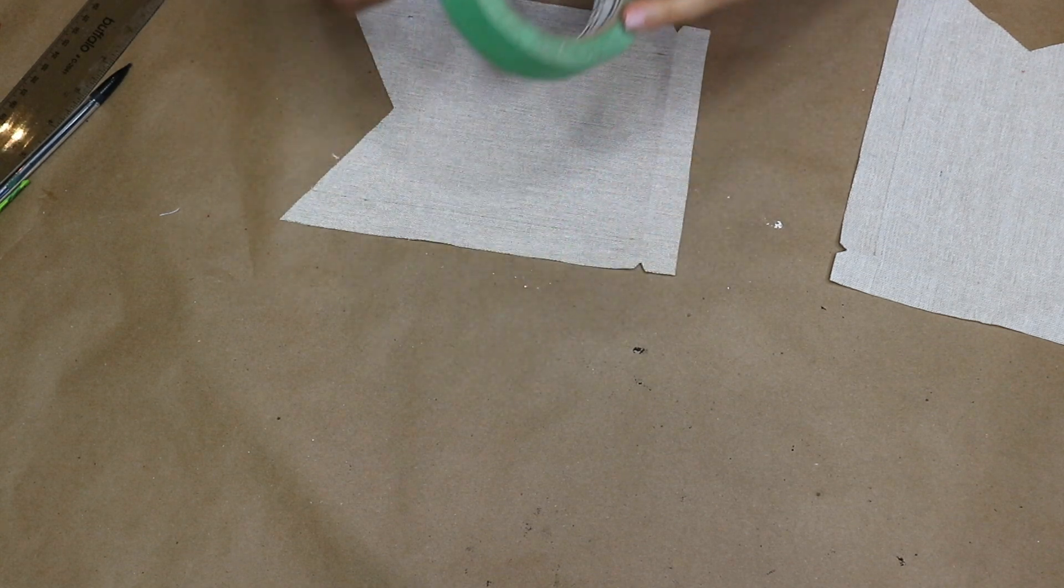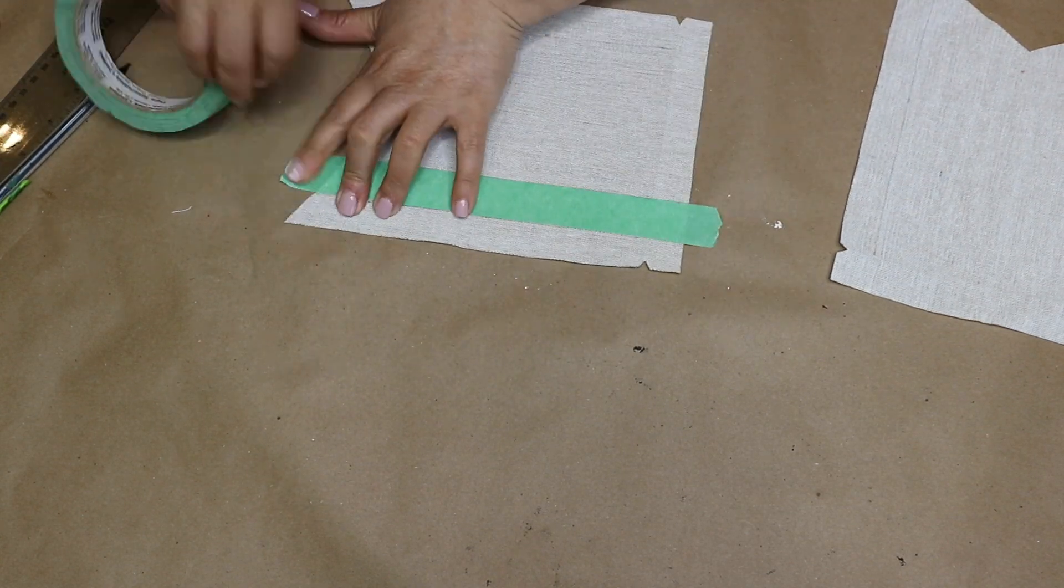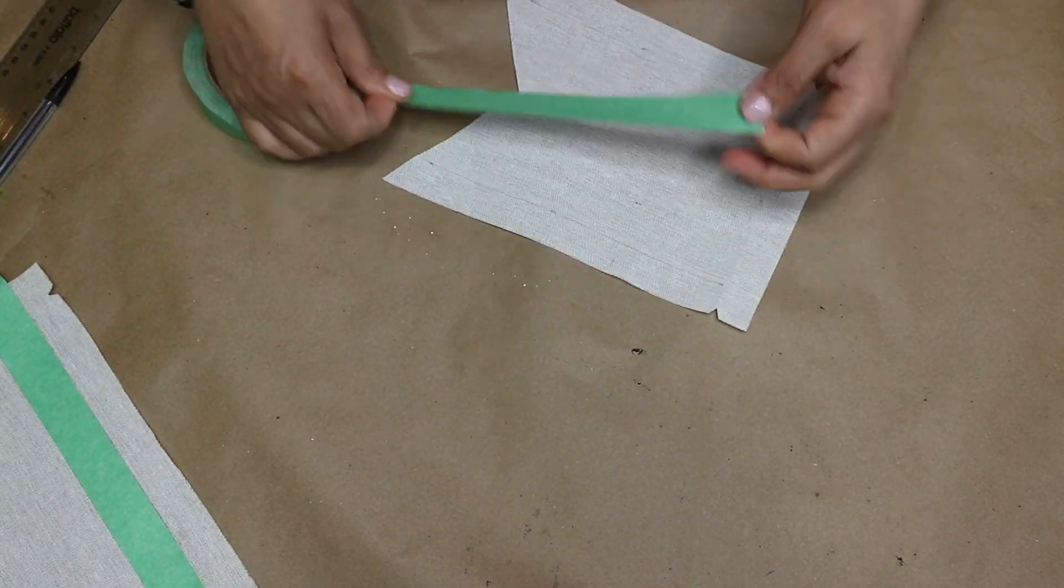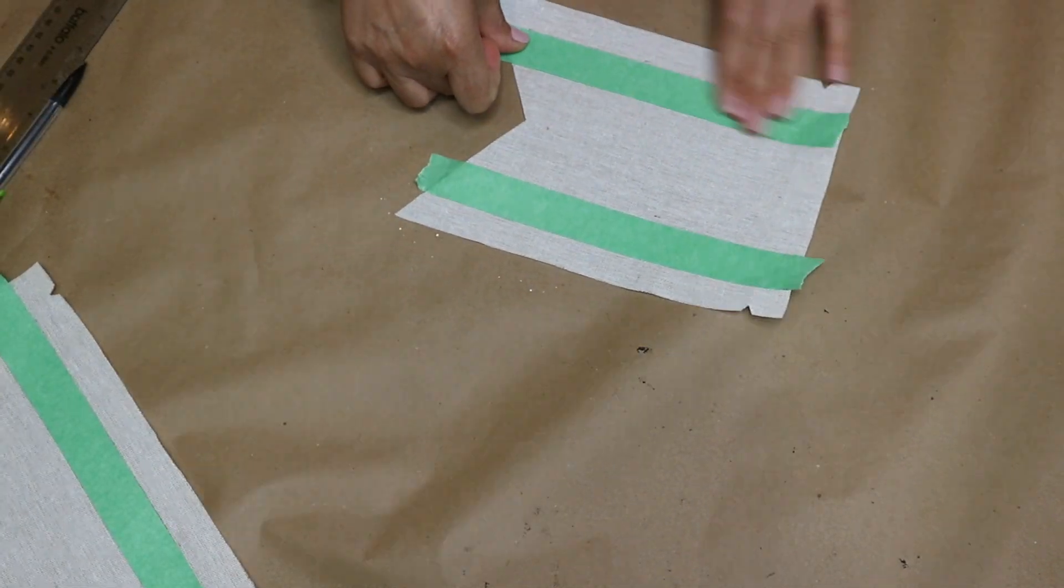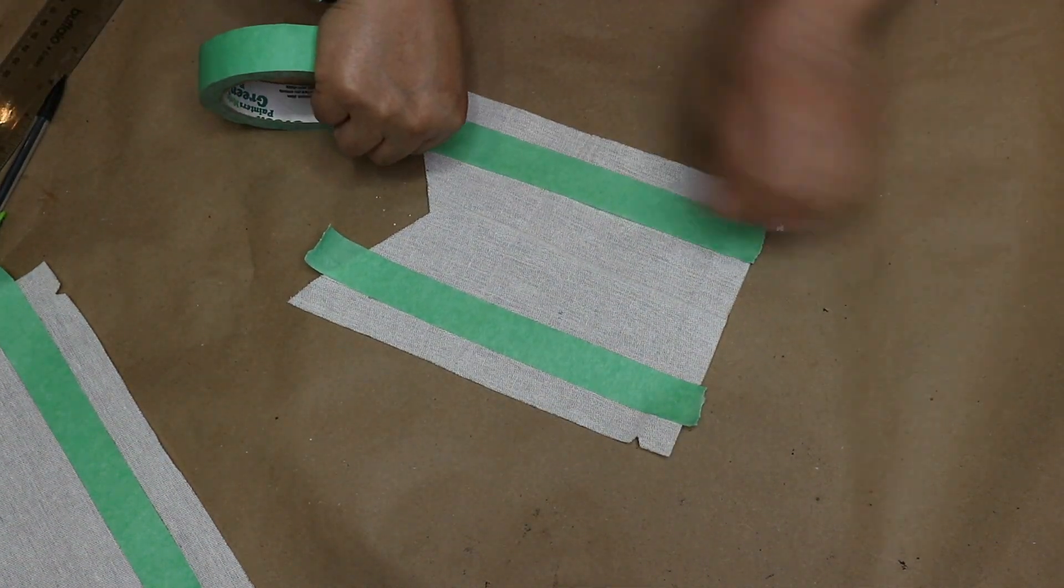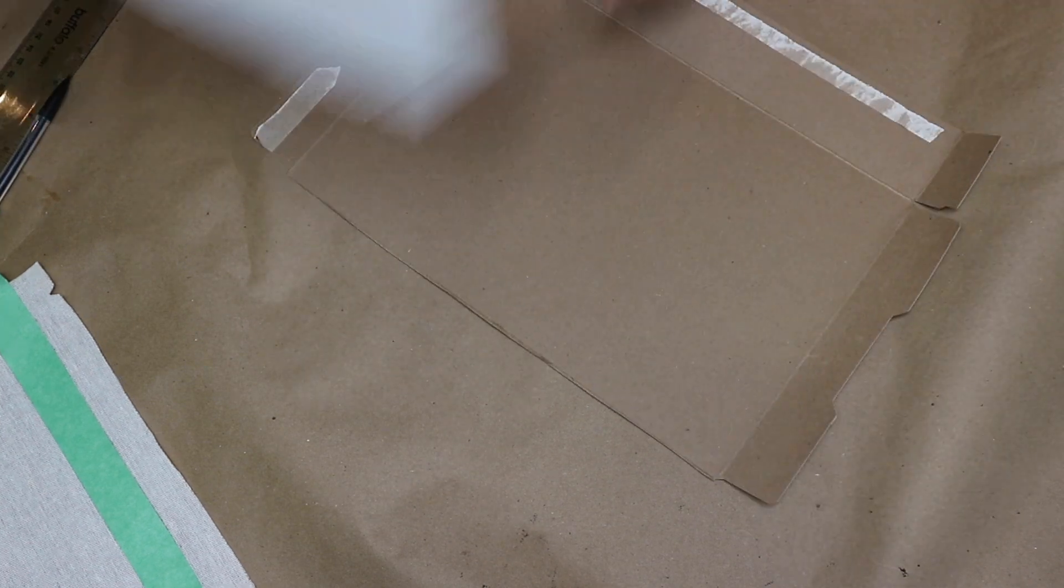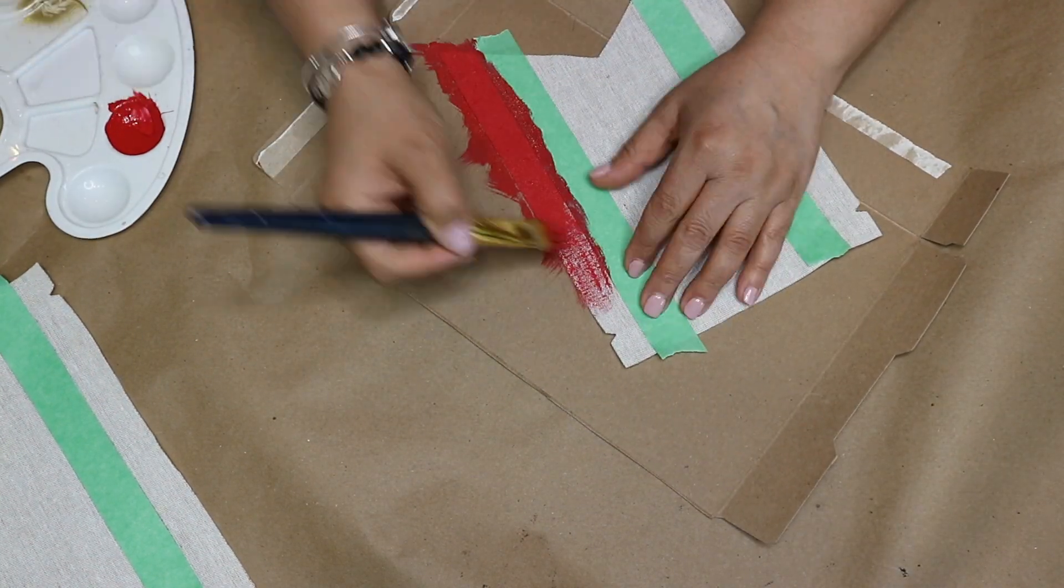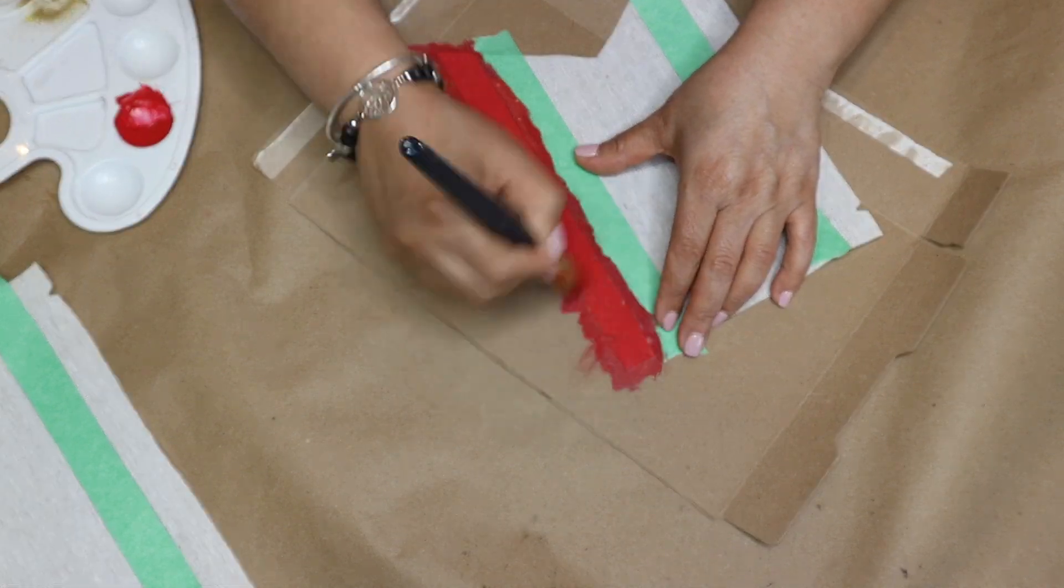Next I'm gonna take some painter's tape and tape it on the canvas to help me get clean lines when I paint the sides. And once I get all that done I will go ahead and paint the sides with this acrylic red paint and then I will allow them to dry completely.